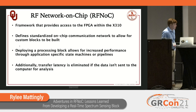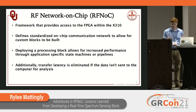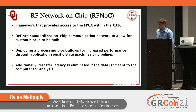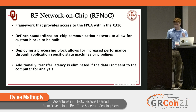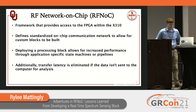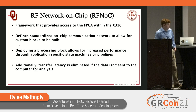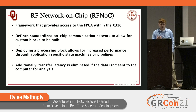RFNOC is a framework that runs on the FPGA in Ettus USRP radios. On devices like the X310, there is additional FPGA floor space available, and we can utilize RFNOC to put our own signal processing blocks on the FPGA inside of this network architecture. By deploying our processing algorithms to FPGA, we can really take advantage of parallelism to get increased performance, as well as custom state machines and application-specific pipelines — offloading that off the CPU.